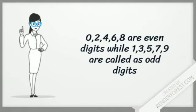0, 2, 4, 6, 8 are even digits while 1, 3, 5, 7, 9 are called odd digits.